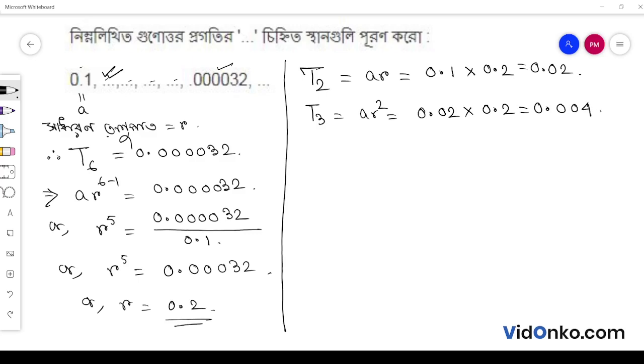Now for t4: t4 equals ar cube, which is 0.004 into r value 0.2, giving 0.0008.